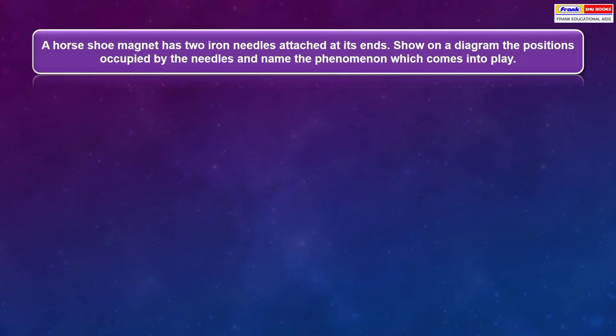A horseshoe magnet has two iron needles attached at its ends. Show on a diagram the positions occupied by the needles and name the phenomenon which comes into play.